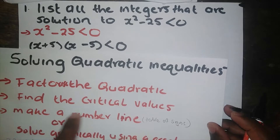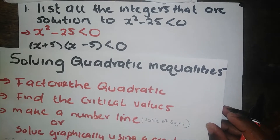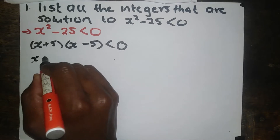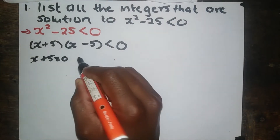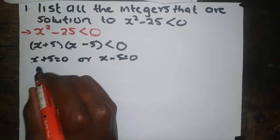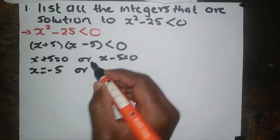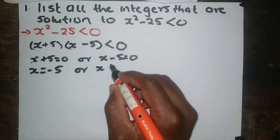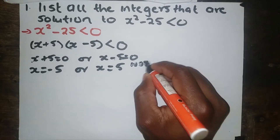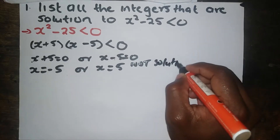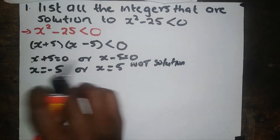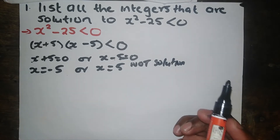In the second step, we find the critical values for the inequality. For simplicity, just say x + 5 = 0, giving x = negative 5, or x - 5 = 0, giving x = positive 5. But bear in mind these are not the solution — I just want to find the critical values, that's why I set them equal to 0. It's not the solution.